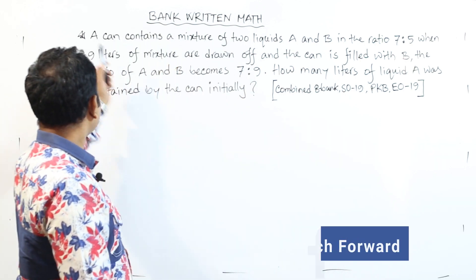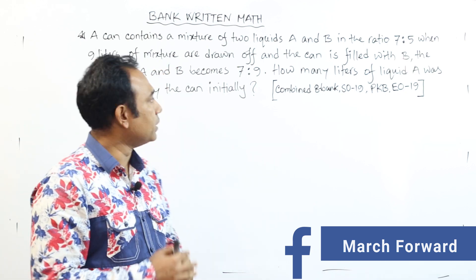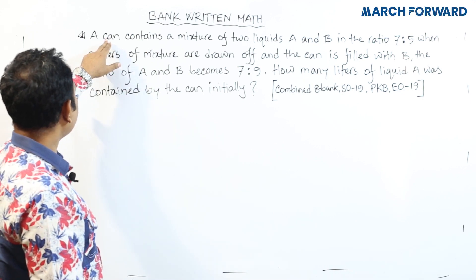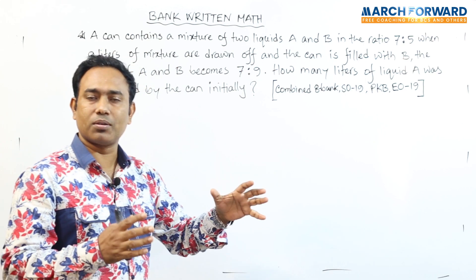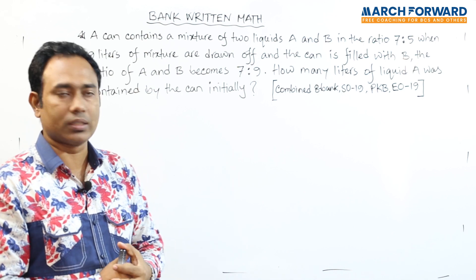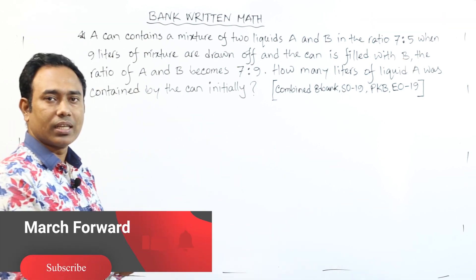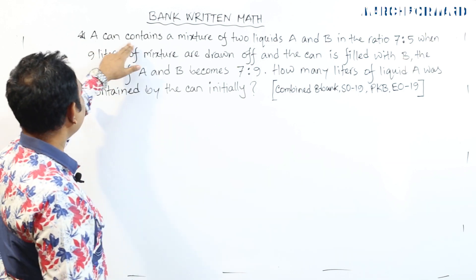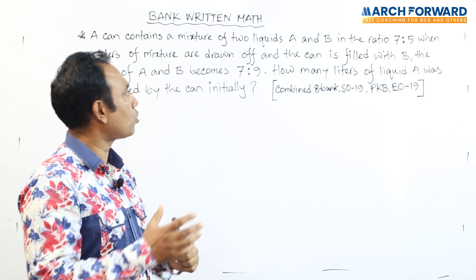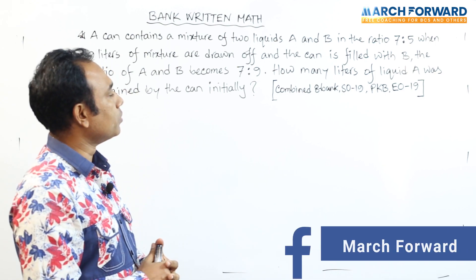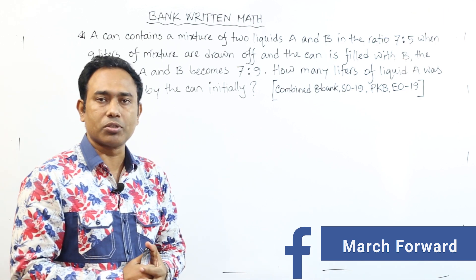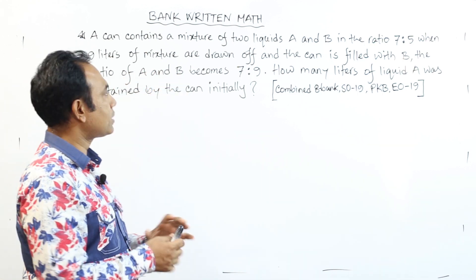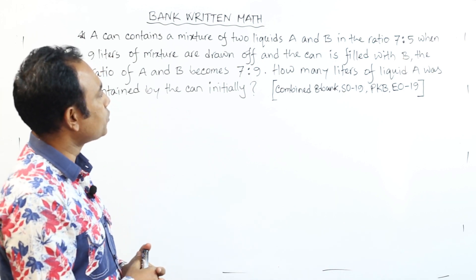The can contains a mixture of two liquids A and B in the ratio of 7 to 5. This is A liquid and B liquid. When 9 liters of mixture is drawn off and the can is filled with B.